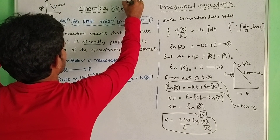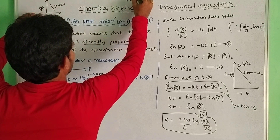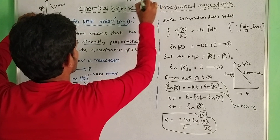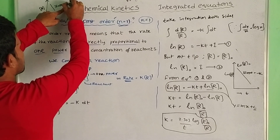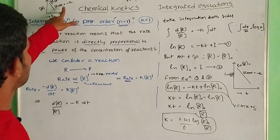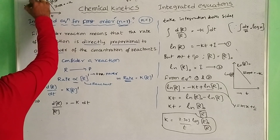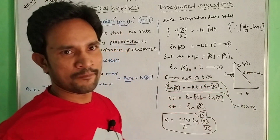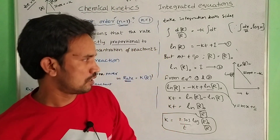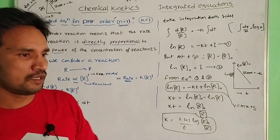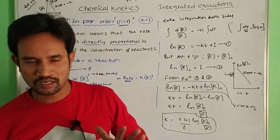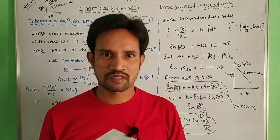So, at this point R₀, this is the zero order graph, and this is the first order graph. This topic carries 4 marks in the exam — very very important, students. Please like, comment, subscribe. Thank you very much.